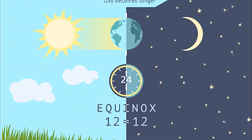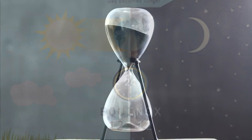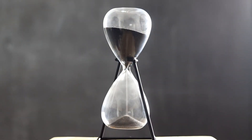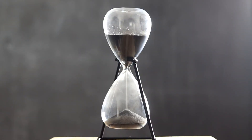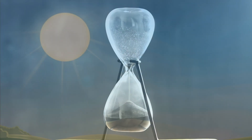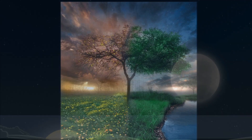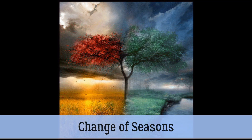Periodic and Non-periodic Changes. Changes that are repeated at regular intervals of time are called periodic changes. For example, change of day and night, change of seasons, etc.